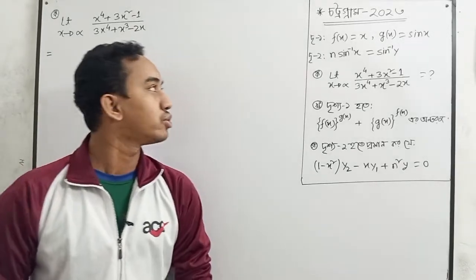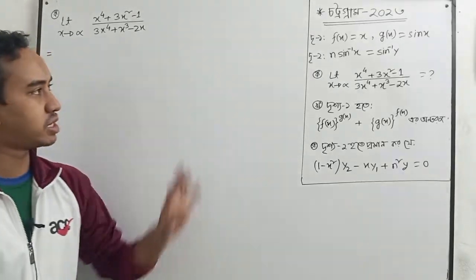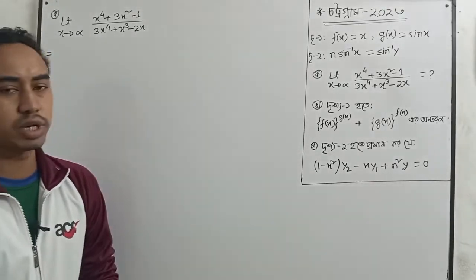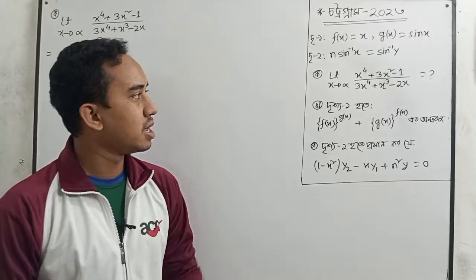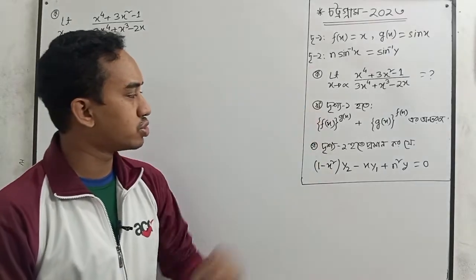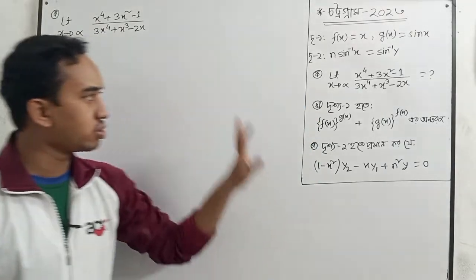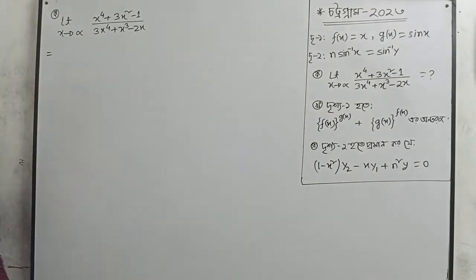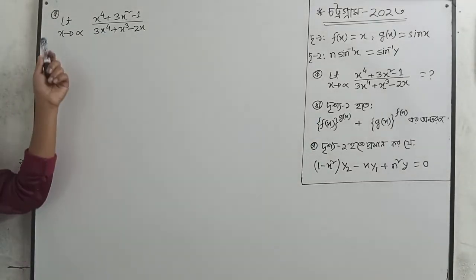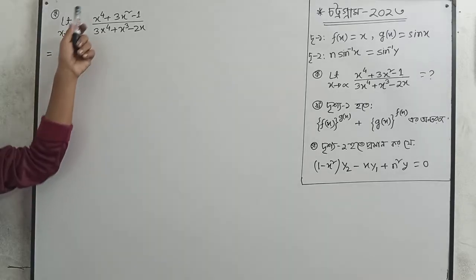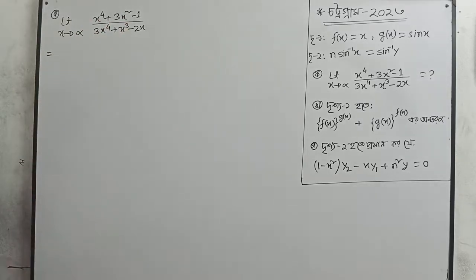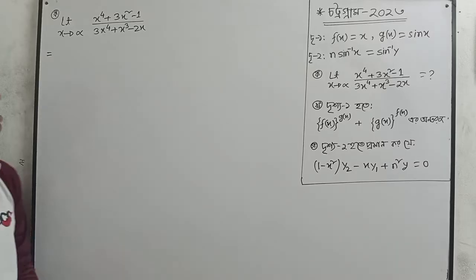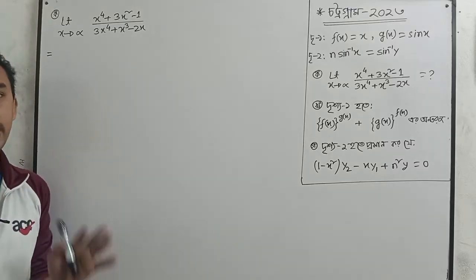This is the first step of the second problem. The first step is: limit as x tends to infinity of (x to the power 4 plus 3x squared minus 1) divided by (3x to the power 4 plus x cubed minus 2x).